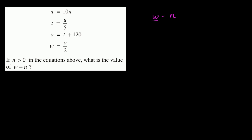So w we can replace with v over 2. So we can rewrite this as v over 2 minus n.